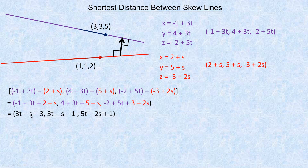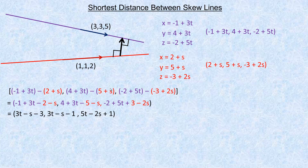What we need is for this vector between the two lines to be perpendicular to both direction vectors. The specific vector that represents the shortest distance is perpendicular to both lines' direction vectors. We're going to use that idea to get two equations in s and t, solve the system, find the values of s and t that generate the two closest points, and then find the distance between those points.